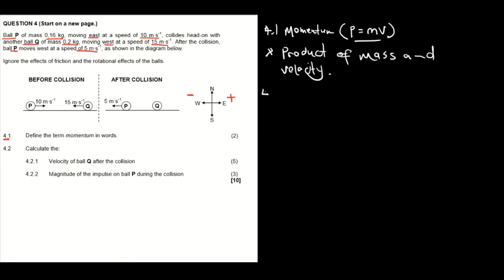Question 4.2 asks us to calculate the velocity of ball Q after the collision. The first thing we're going to do is identify the information we have. For ball P, we know that the initial velocity is 10 meters per second going in the east direction, which is positive.